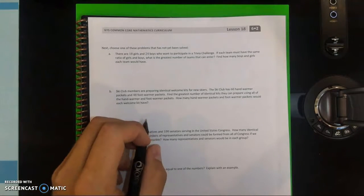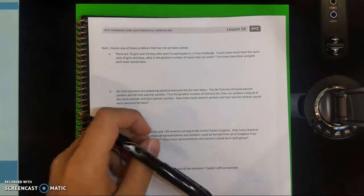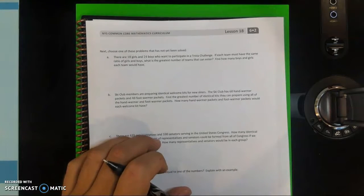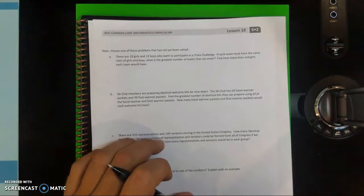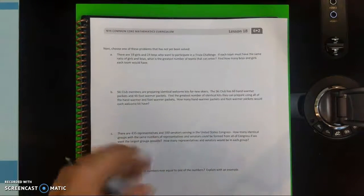So today we're going to be doing problem A. You can see there's 18 girls and 24 boys who want to participate in a certain challenge. We want to know what is the greatest number of teams that they can have and how many boys and girls each team would have. So to start, you're going to have to find the GCF.